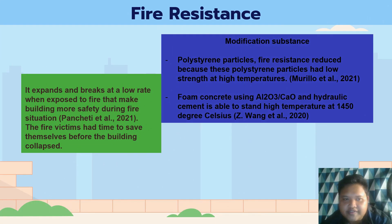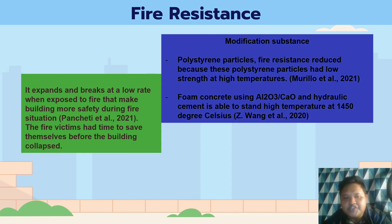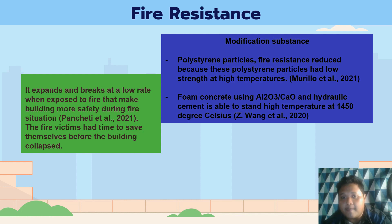Fire resistance is a characteristic that helps foam concrete expand and break at a low rate when exposed to fire, giving fire victims time to save themselves before the building collapses. Research has shown that polystyrene particles do not help increase the fire resistance of foam concrete, but using aluminium oxide, calcium oxide, and hydraulic cement enables foam concrete to withstand high temperatures up to 1450 degrees Celsius.